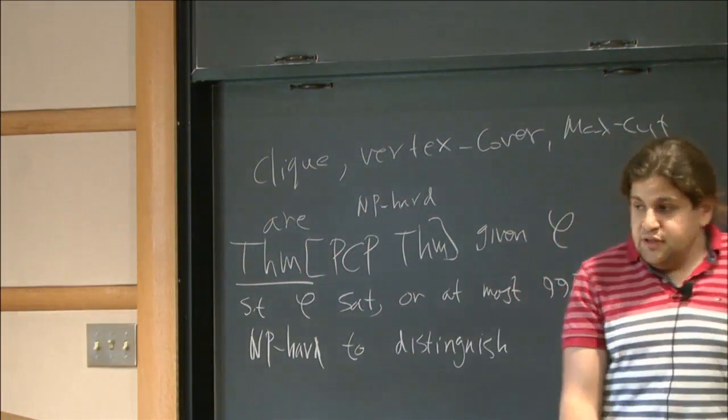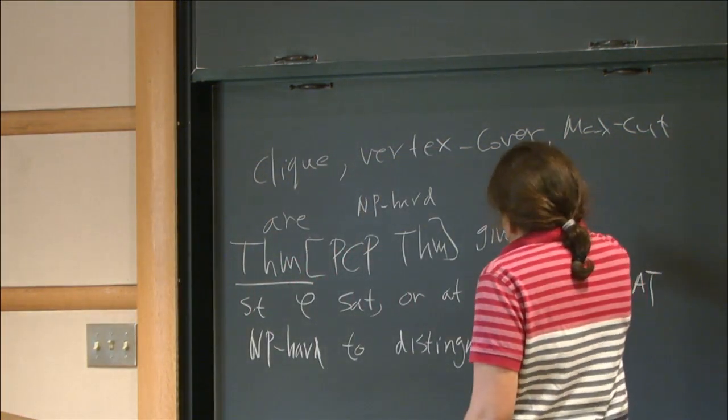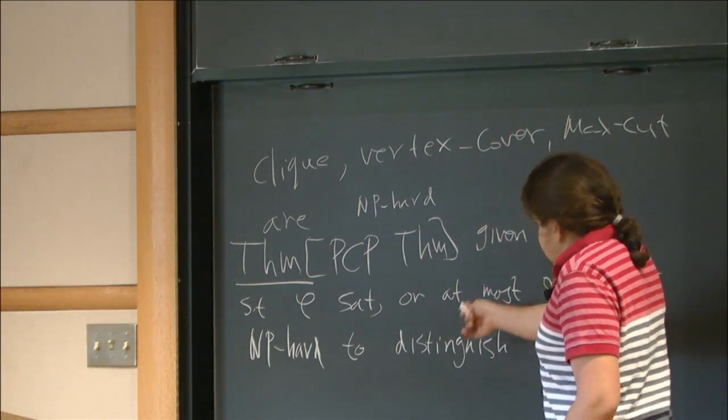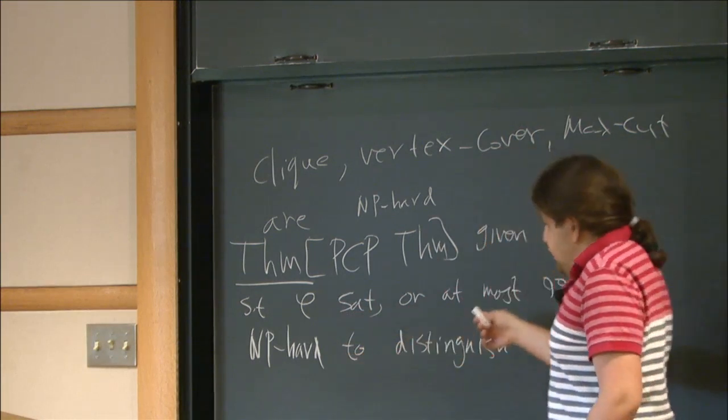So, this theorem says, in a sense, that it's hard to approximate the number of clauses that you can satisfy by this ratio between 1, which is satisfiable, and 99%.